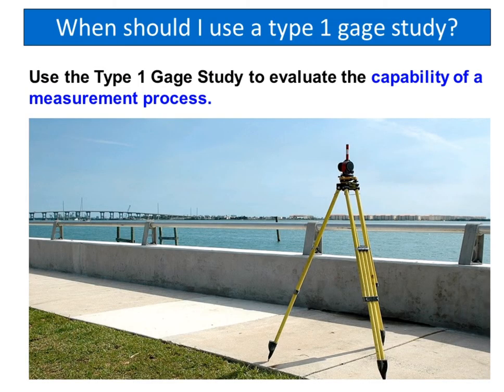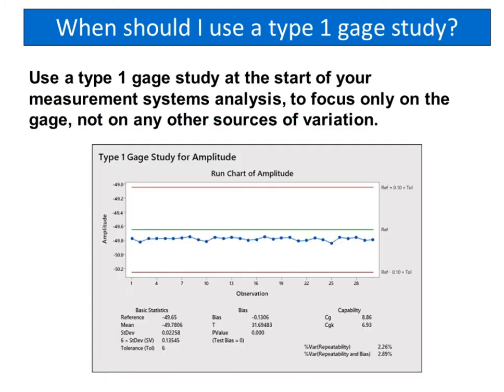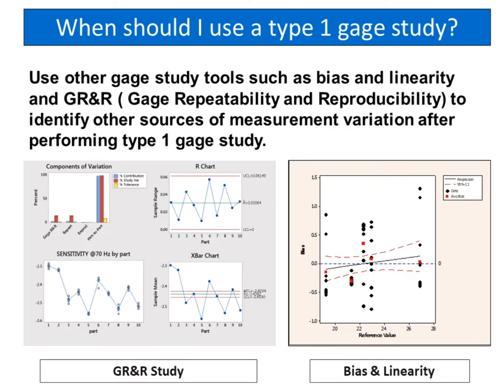When should you use a type 1 gauge study? Use it to evaluate the capability of a measurement process, specifically at the start of your measurement systems analysis to focus only on the gauge, not on any other sources of variation. Use other gauge study tools such as bias and linearity and GR&R — gauge repeatability and reproducibility — to identify other sources of measurement variation after performing a type 1 gauge study.